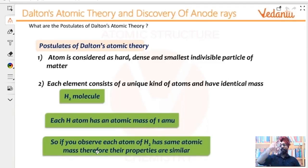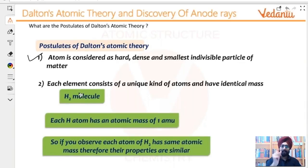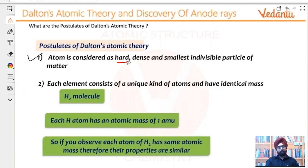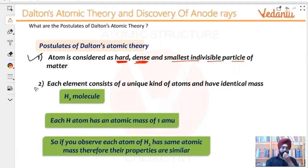These are the postulates that Dalton gave for his atomic theory. Number one: atom is considered as a hard, dense, and smallest indivisible particle of matter. It is hard — not like a pillow. It is dense — lots of material packed into the atom. And it is the smallest indivisible particle of matter.